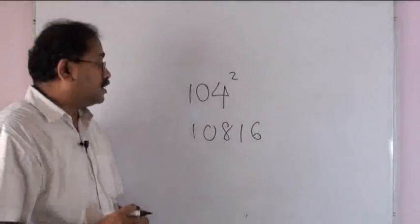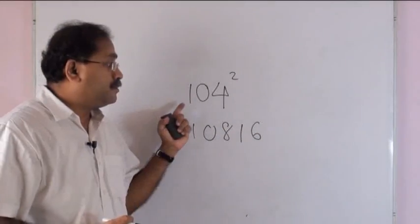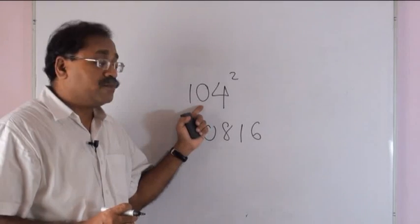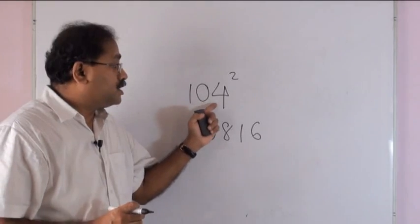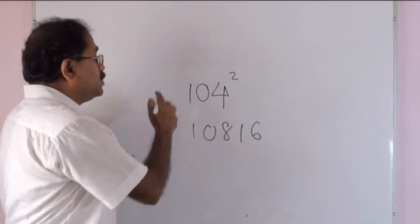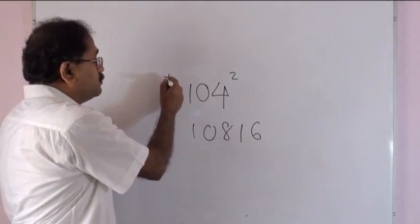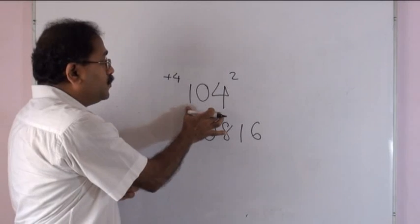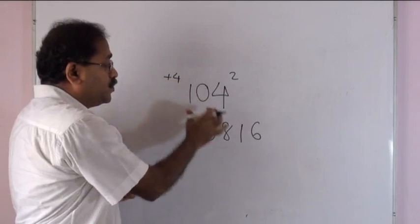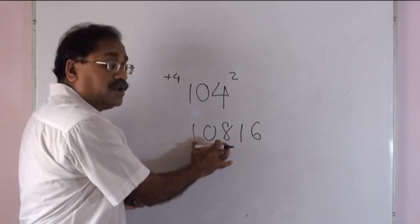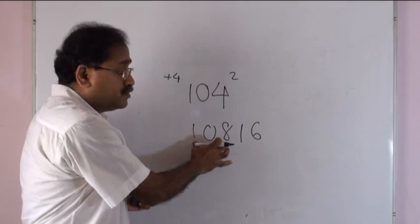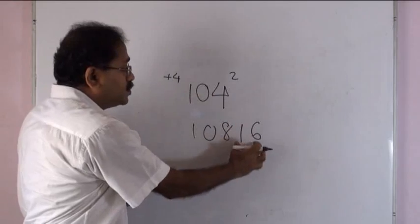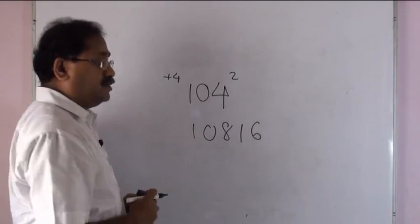So what are we doing here? 104 is 4 more than 100, so 104 plus 4 gives 108, followed by 4 squared, which is 16.